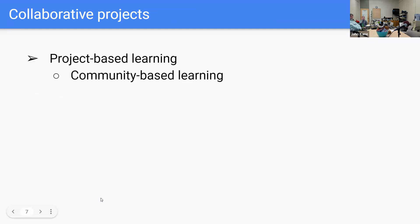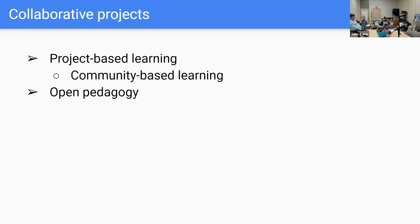There are lots of options for collaborative projects. Project-based learning is where you assign some type of project, typically a community-based project. They're available in almost any discipline. There's a group on campus that helps support community-based experiential learning, though it hasn't been as active since COVID. In many disciplines there are lots of projects you could take on in the community — working with homeless shelters, food banks, non-governmental organizations of various types, or even building a playground for children.